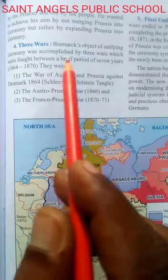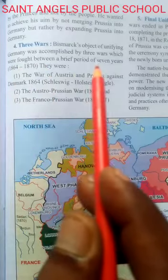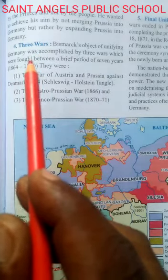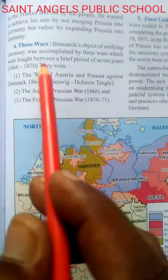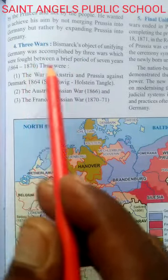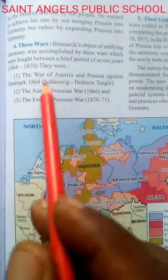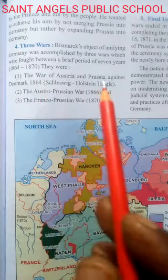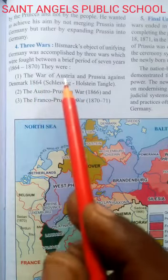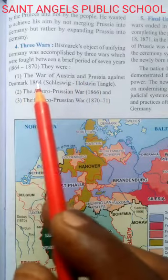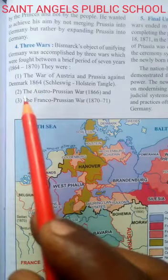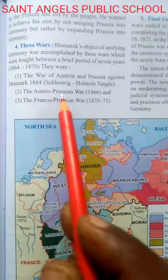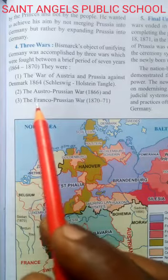Bismarck's objective of unifying Germany was accomplished by three wars found within a brief period of seven years, 1864 to 1870. The first war was Austria and Prussia against Denmark. The second was Austria and Prussia in 1864.